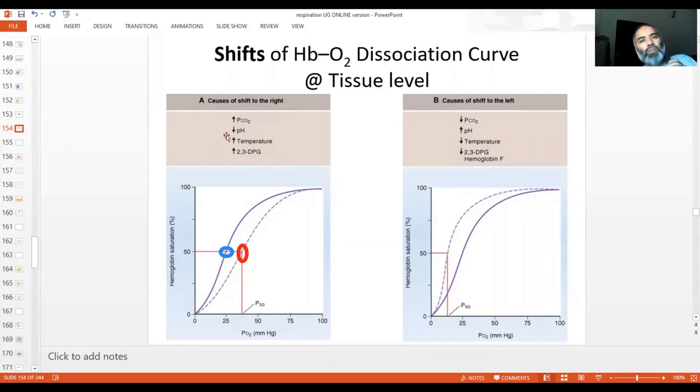Any condition which causes a rightward shift will make the bond between hemoglobin and oxygen loose, unstable, such that oxygen can now easily come out of hemoglobin.